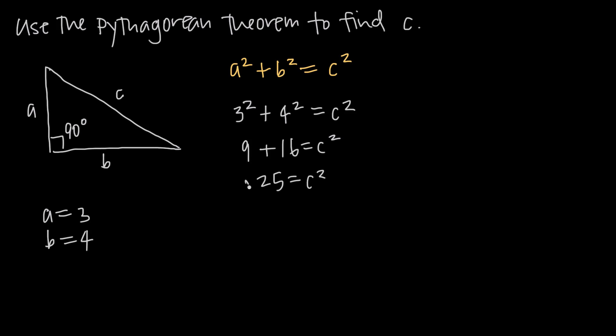Now in order to solve for c, I need to take the square root of both sides, keeping my equation balanced. On the left hand side, I'll get positive or negative 5 as the square root of 25, and on the right hand side, I'll get c. Because we're dealing with an object in physical space, a triangle, a negative length of negative 5 for the hypotenuse makes no sense. Our triangle wouldn't even exist. So we can discount this negative length, and we can say c is equal to 5.